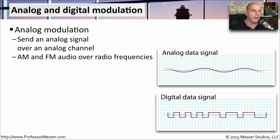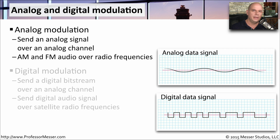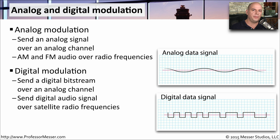As you get farther and farther away from the AM or FM radio antennas, the signal slowly begins to degrade until some point where all you get is static and you're not able to pick up the actual transmitted signal. With digital communication, we're doing this a little bit differently. We're still using that analog channel — we could still be using the radio waves, for instance, to send the signal. But the type of signal is very different.